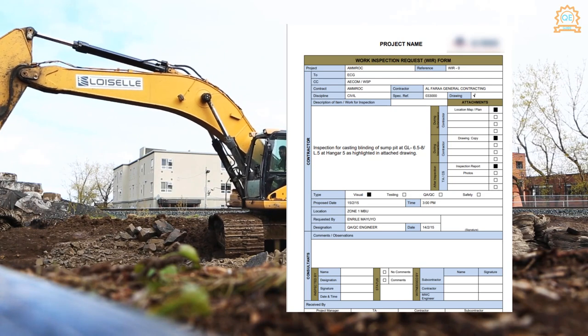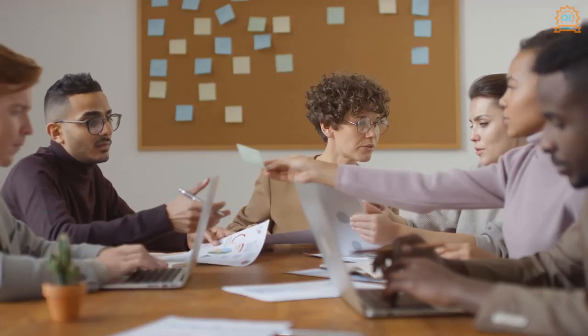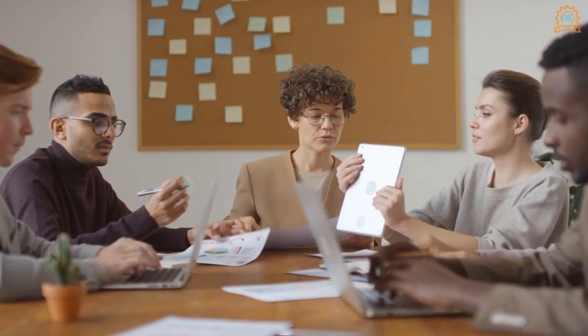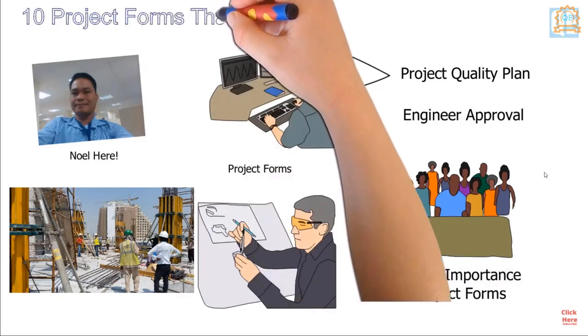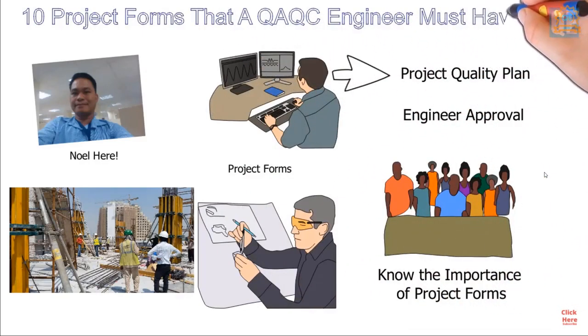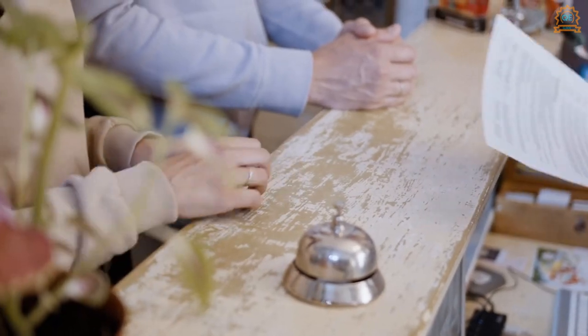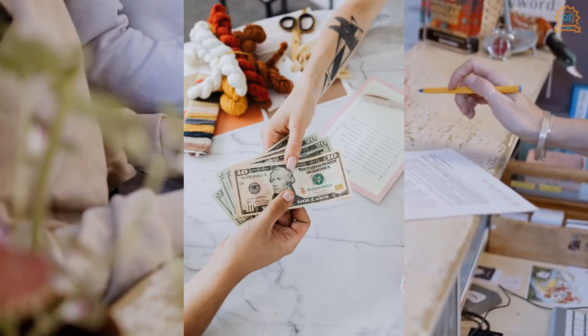There are also various types of document controlling systems for different projects, but work inspection requests are the ones that would definitely require proper document controls. In my previous blog, there are about ten different project forms that I mentioned on how a WIR is supposed to be used. Also remember that a WIR is necessary when you submit the project for regular billing.